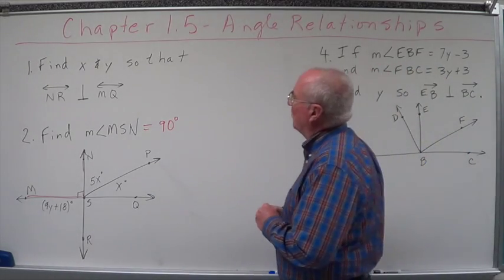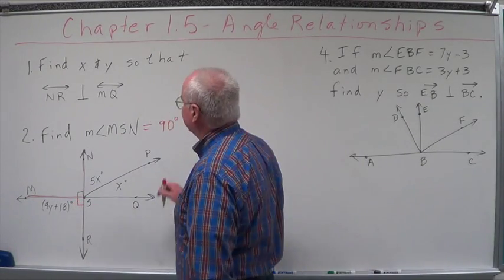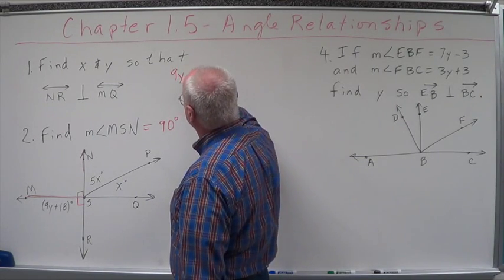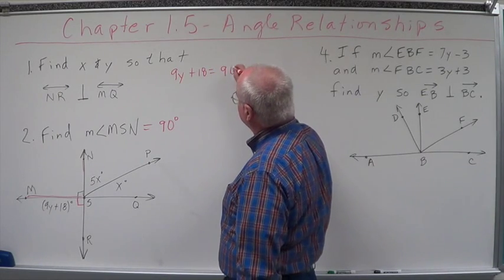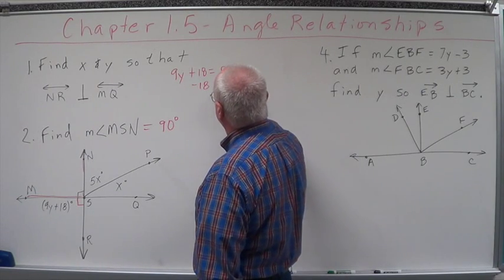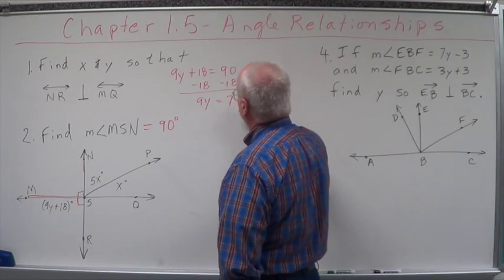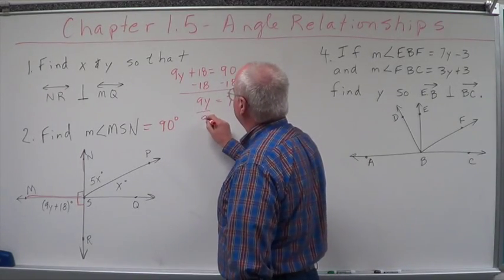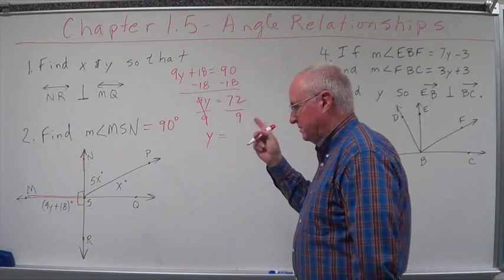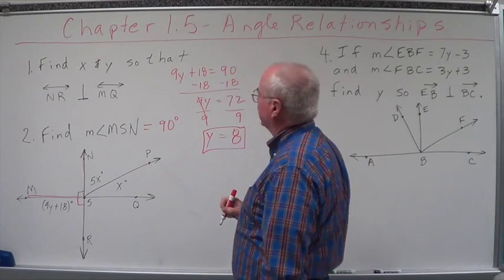Now, the measure of x and y. What's this angle have to be? Well, this angle also has to be 90. So that means we have 9y plus 18 equals 90. Subtract the 18. So we end up with 9y equals 72, divided by 9. Y equals 72 divided by 9, which is 8. So y equals 8.